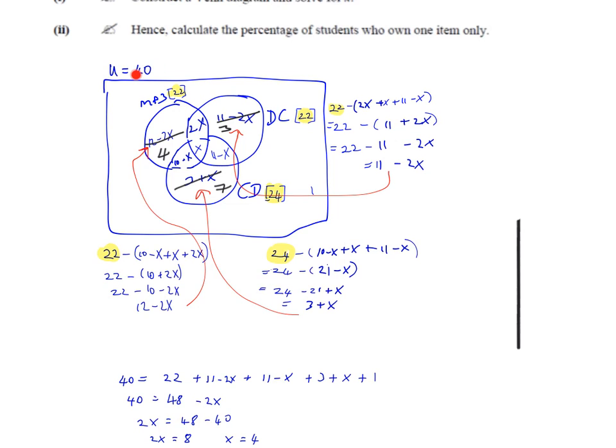We need to add them up; that comes to 14. To get them as a percentage of the total number of students, we put 14 over 40 and multiply it by 100. If you work it out in your calculator, you're going to get 35, so 35% of students owned one item only.